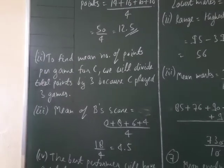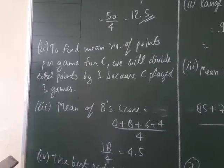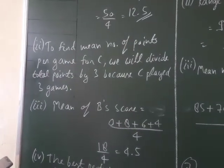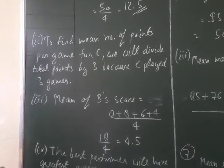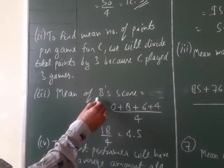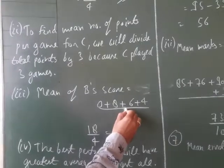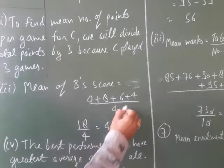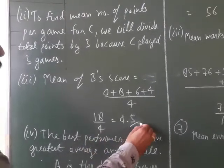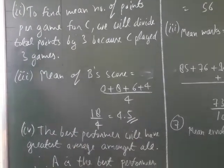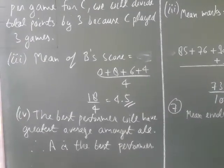Third part: player B played in all 4 games. Mean score for B = (0+8+6+4) divided by 4 = 18 divided by 4 = 4.5.